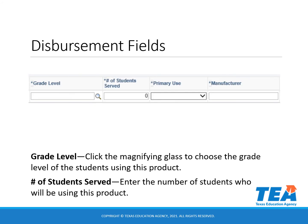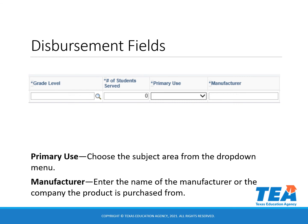In the grade level field, click the magnifying glass and choose from the options provided. You will not be able to type into that field. In the number of students served field, you will enter the number of students who will be using this product. In the primary use field, you will click on the down arrow to choose the subject area the product will be used for.